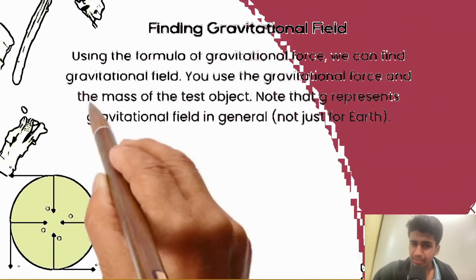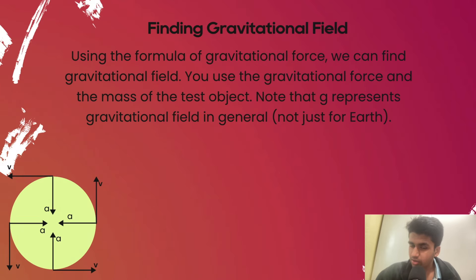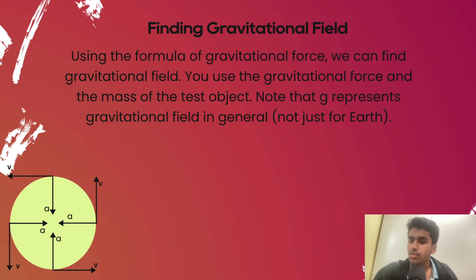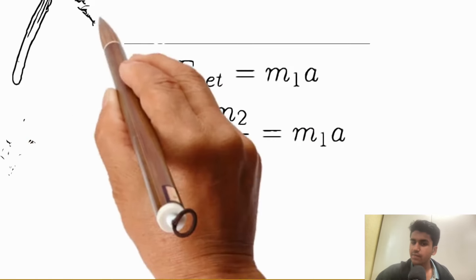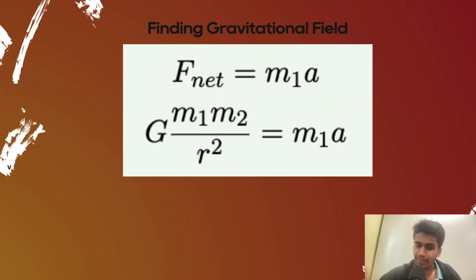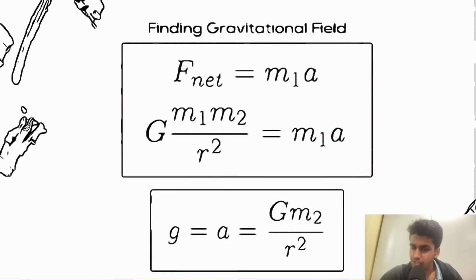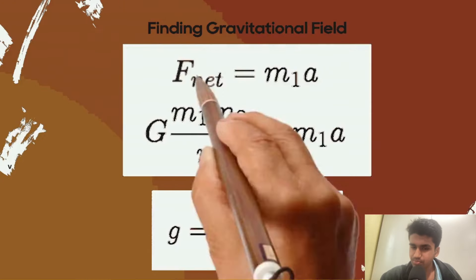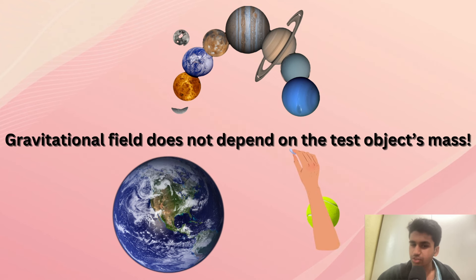So how do we find gravitational field? Using our formula of gravitational force, we can find the field. We need to first find the gravitational force on the test object and the mass of the test object. Note that lowercase g represents gravitational field in general, but on Earth this value of g is 9.8. To find gravitational field, we write out f-net equals m1 times a, where m1 is the mass of the test object. We know the force is G·m1·m2 over r squared. We divide both sides by m1, and we find that the gravitational field is G·m2 over r squared. Clearly, gravitational field does not depend on the test object's mass, because m1 is not in the formula for it.